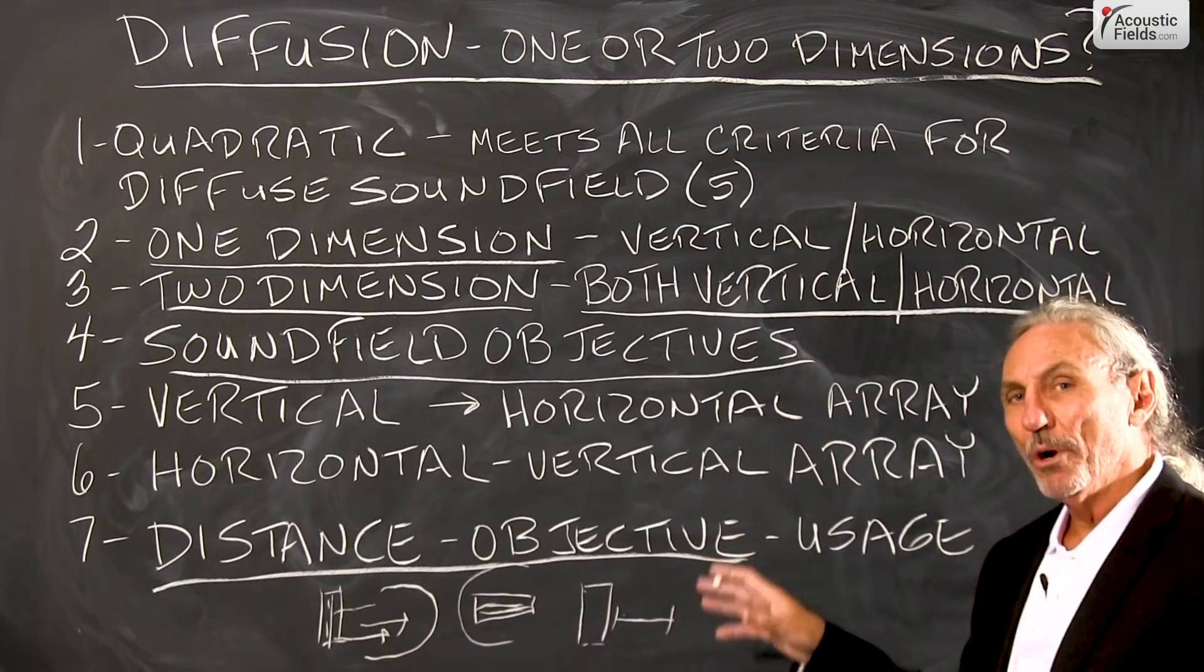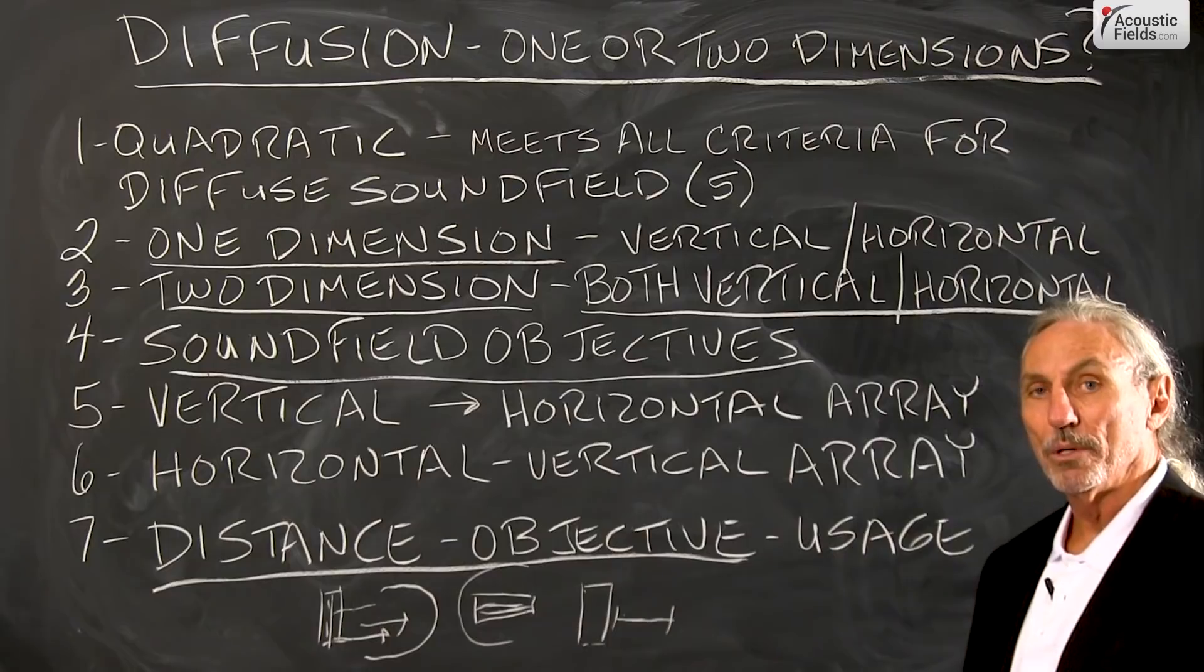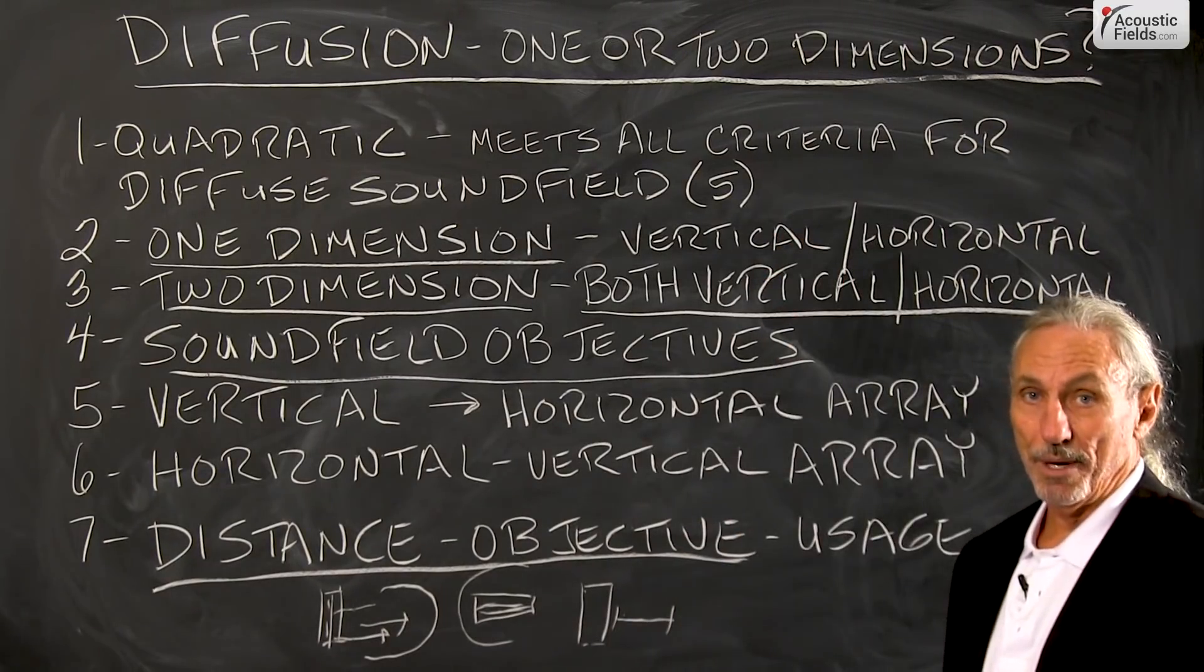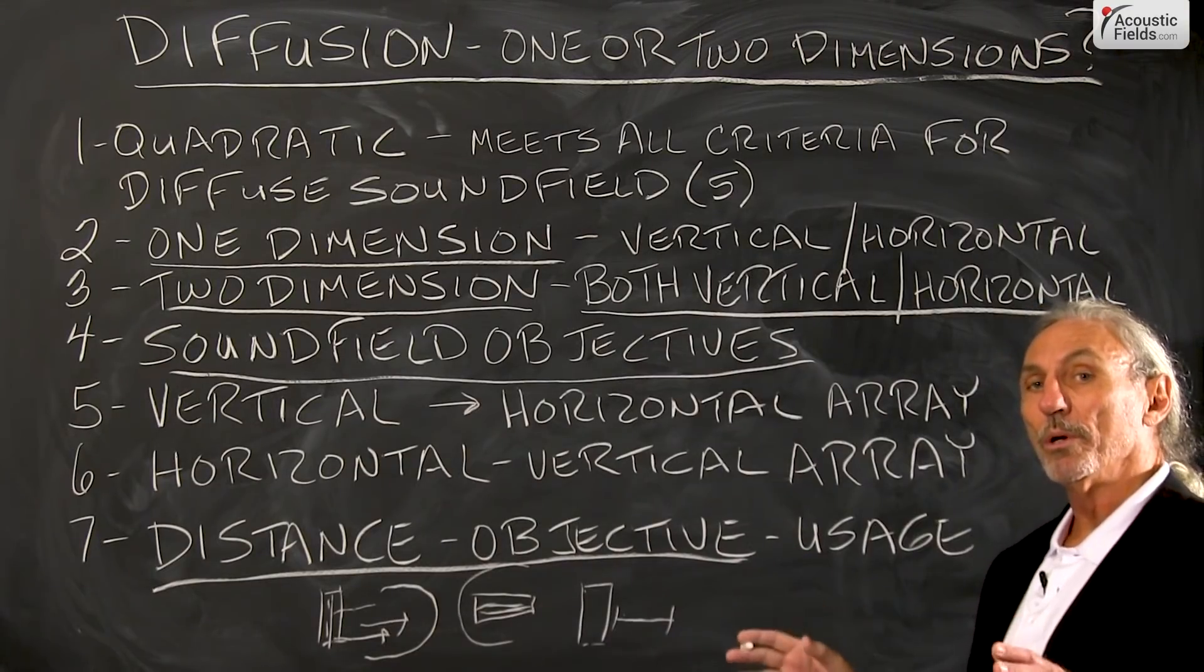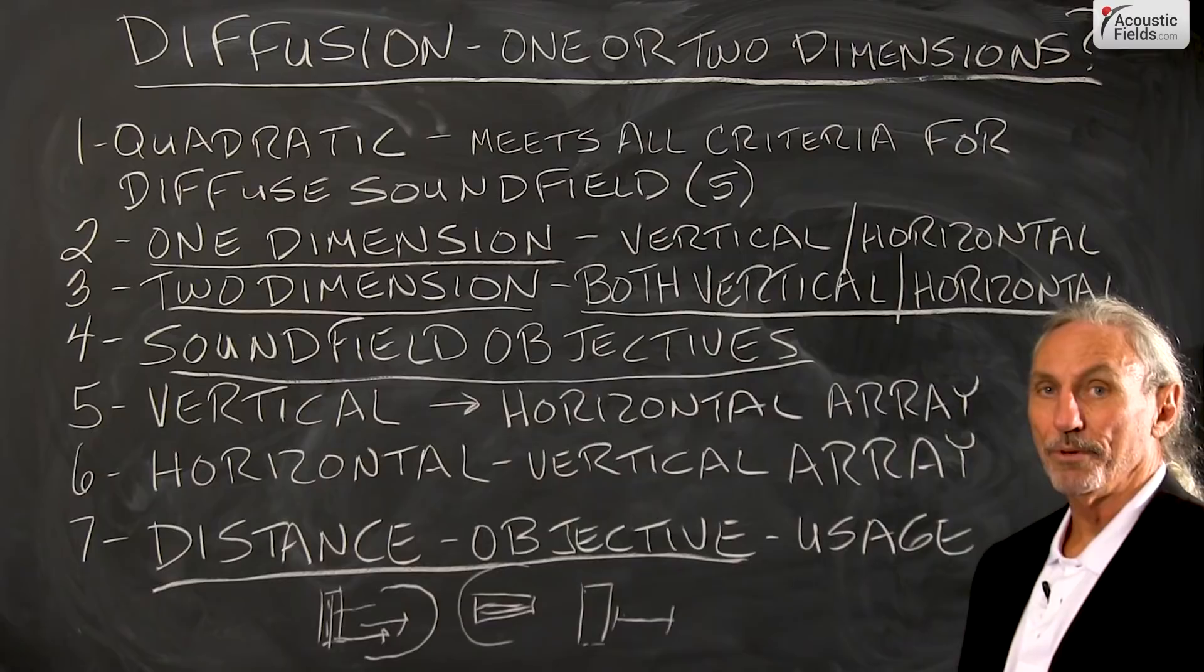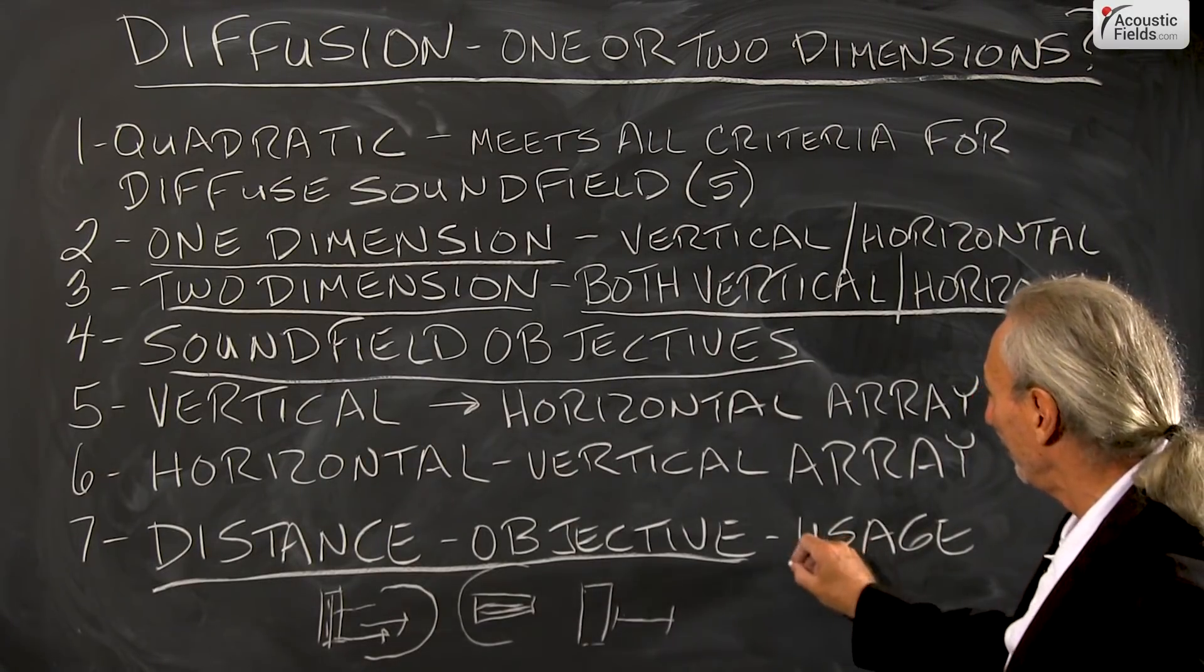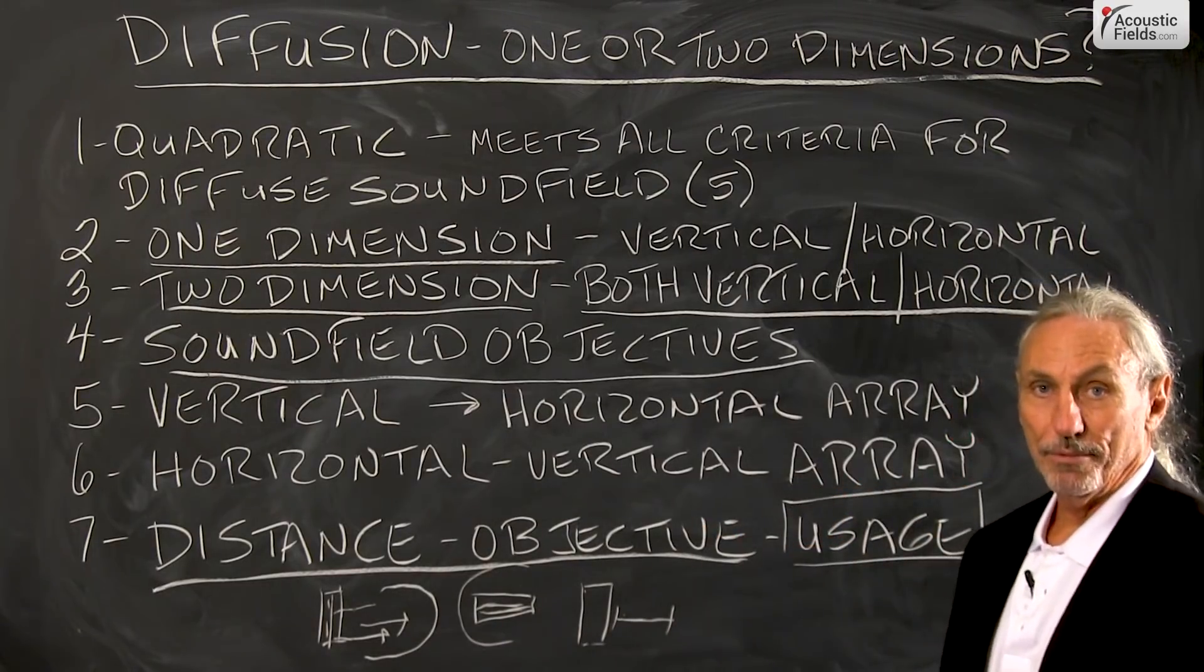So when we don't have enough distance for vertical or strictly horizontal one-dimensional diffusion, we can look to two dimensions. And the thing about two-dimensional diffusion is it'll work within distances that we cannot use for vertical and horizontal one-dimensional diffusion. So it all depends on what we're trying to do in the room, the usage, and the objectives of the room.